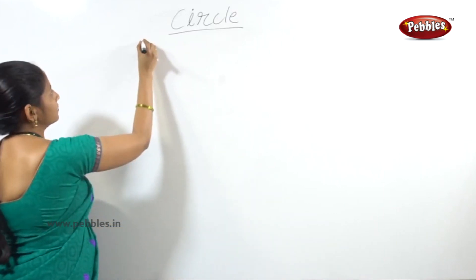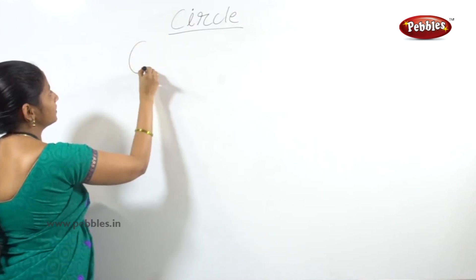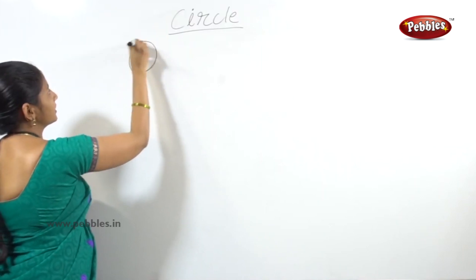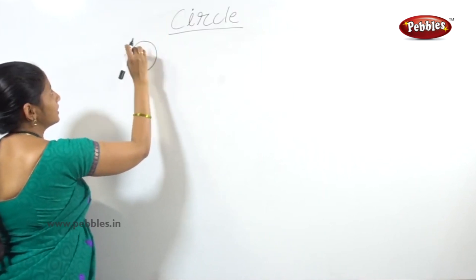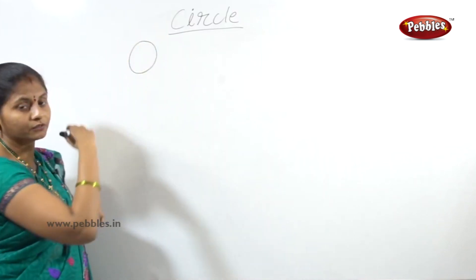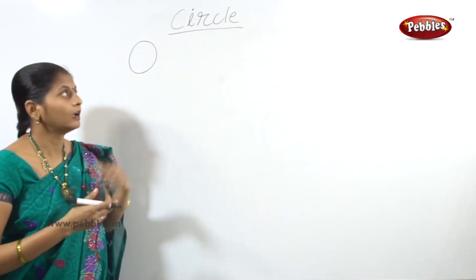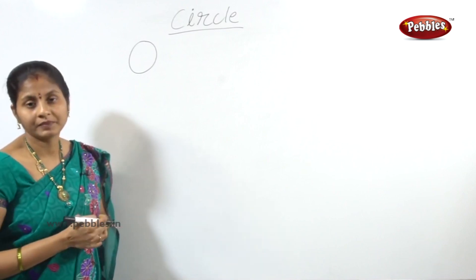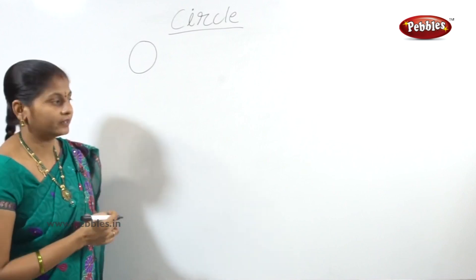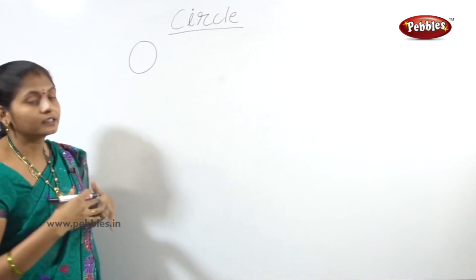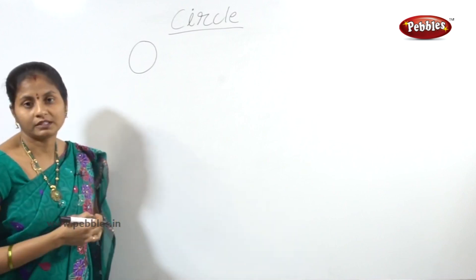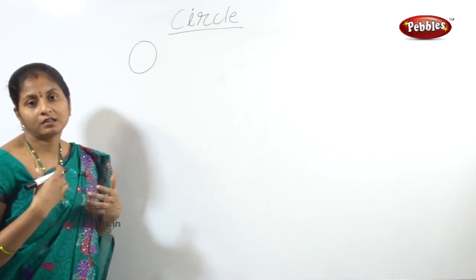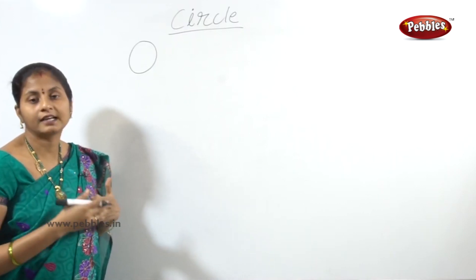A circle is a closed curved figure. A curved line that is closed is called a circle.